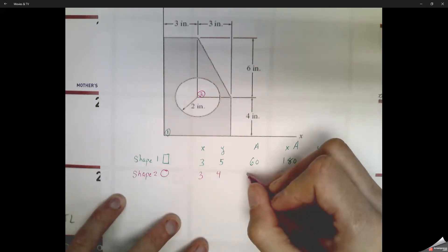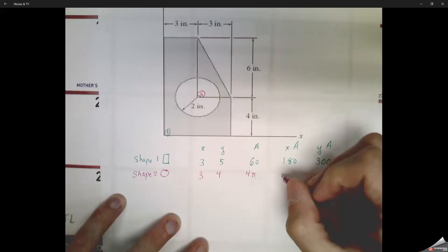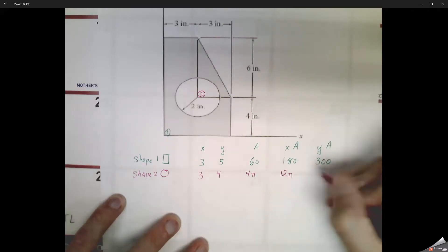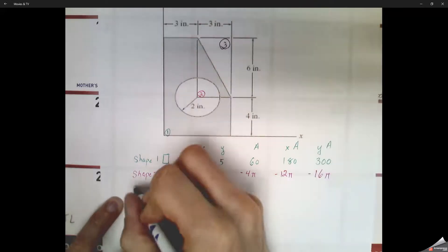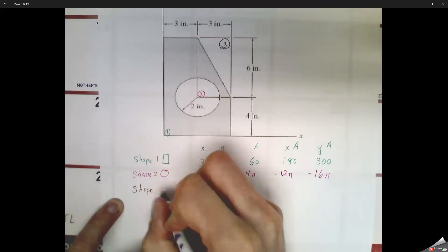Second shape we're going to look at is the circle. Circle's there towards the middle of the shape itself. To get to the center of that circle, we've got to start at the bottom left corner. We've got to go over 3, then we've got to go up 4, so the center is 3, 4. Area of that circle is pi r squared, radius being 2, cutting it out, so negative 4 pi.